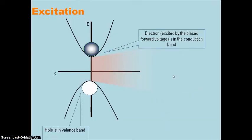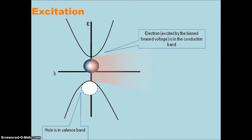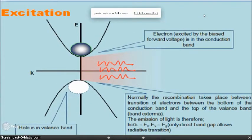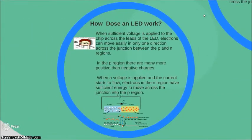Only when sufficient voltage is applied to the semiconductor chip can current flow and electrons cross the junction into the P region. The excitation process consists of two parts: first, electrons in the conduction band, and second, holes in the valence band. When the electron is excited by the forward bias voltage in the conduction band, it moves to the valence band, combines, and releases energy in the form of a photon.